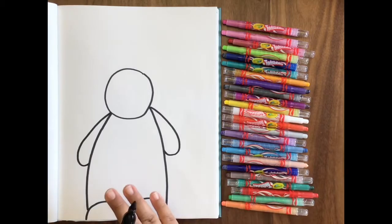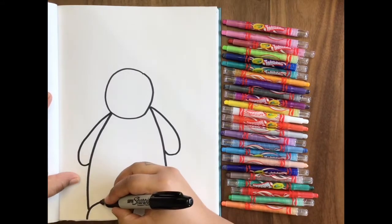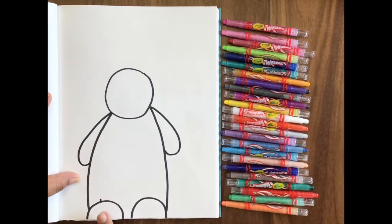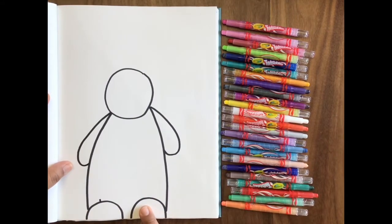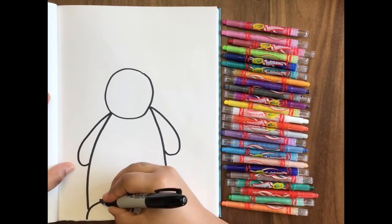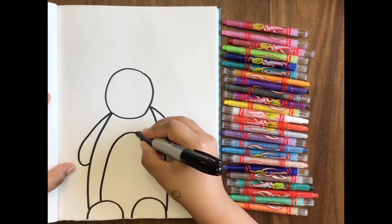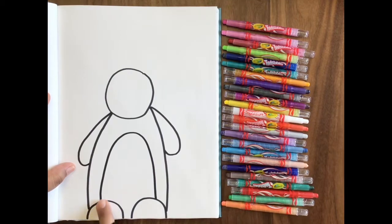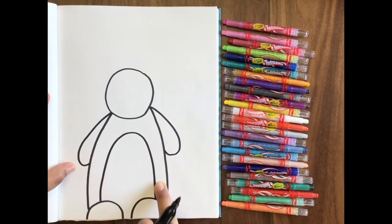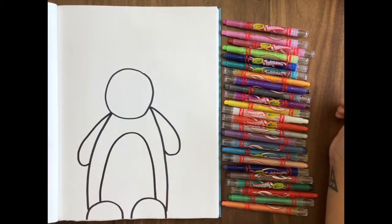The next thing we're going to do is our rabbit's belly. So what we're going to do is we're going to take a line and we're going to do an upside down, uppy umbrella, like we would for our teddy bears or any sort of animal that has a little belly there. So we're going to do a little uppy umbrella upside down. We're going to go from this foot up, over, around, and down, connect to that foot.